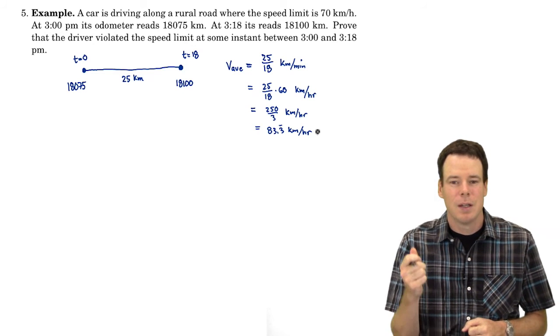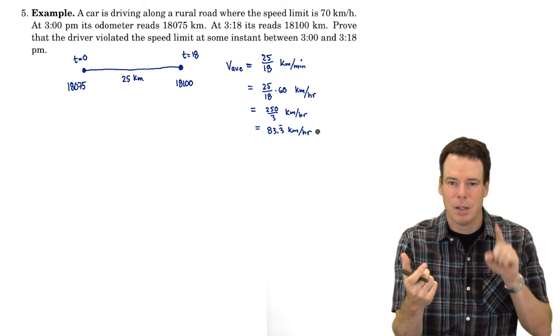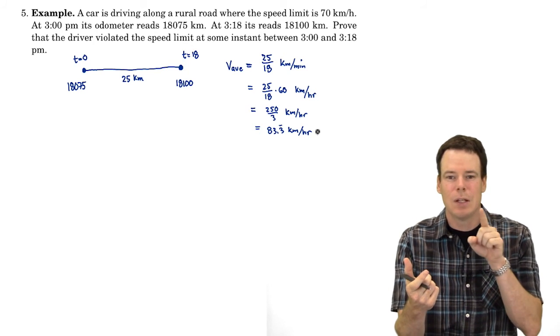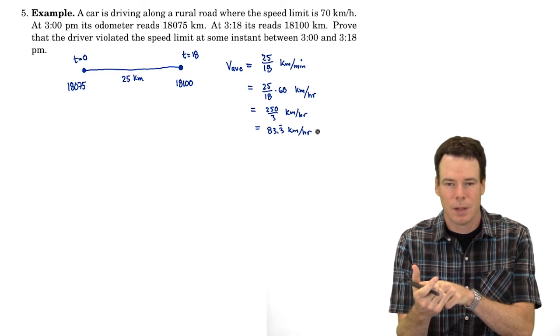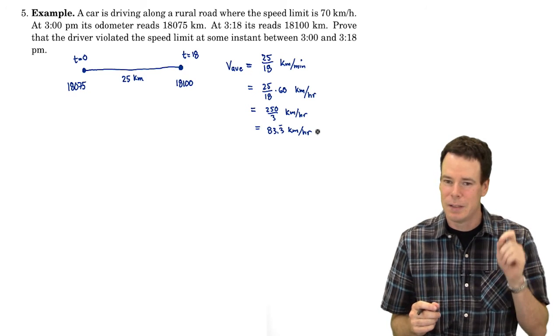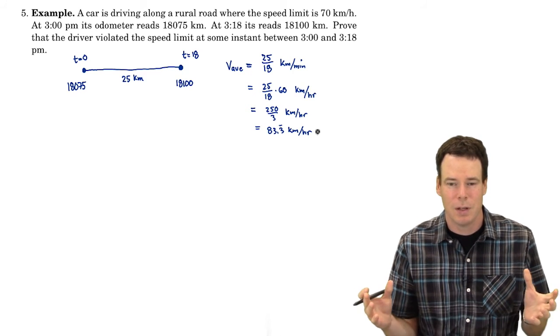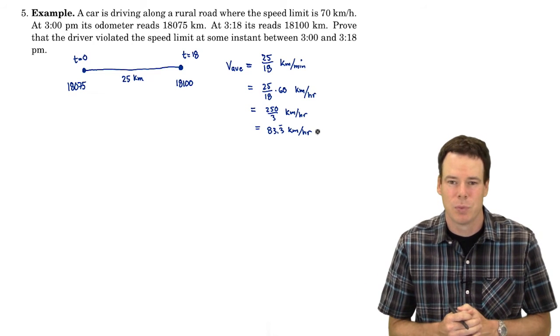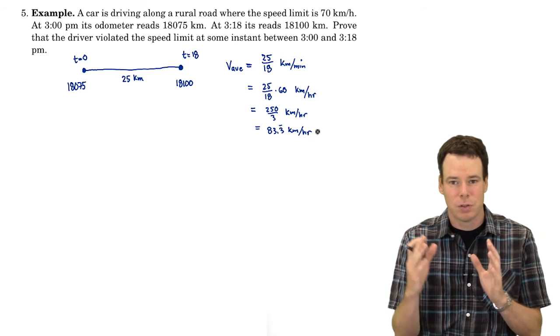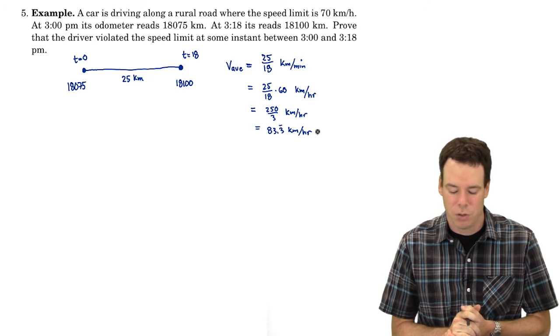The mean value theorem says if that's your average velocity, then there had to be a place where your instantaneous velocity was equal to your average velocity. You can't have 83.3 as your average velocity unless at some point along your travels your instantaneous velocity was that as well. So there had to be a place where you were speeding. I don't know when—if it was right at the beginning, the end, or somewhere in between—but you had to be speeding at some point.